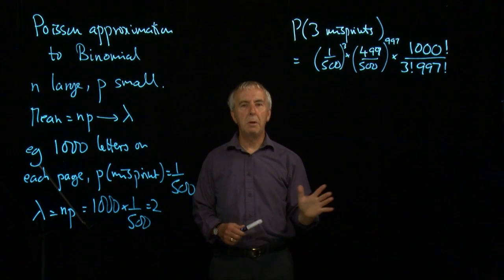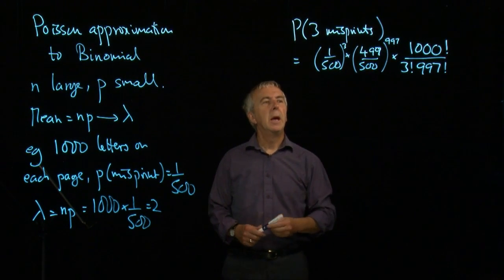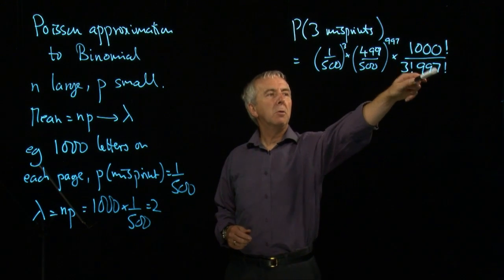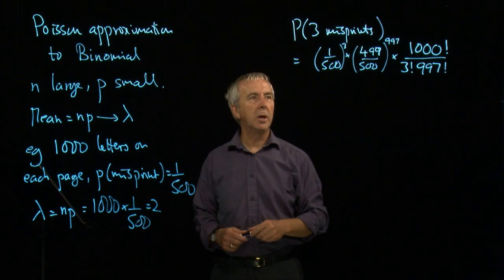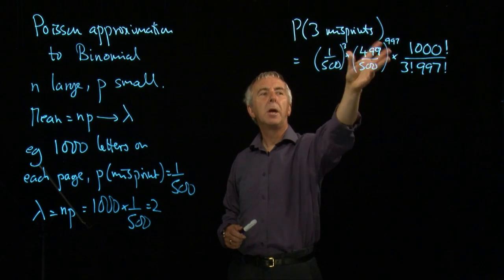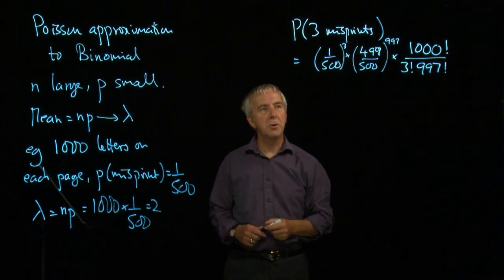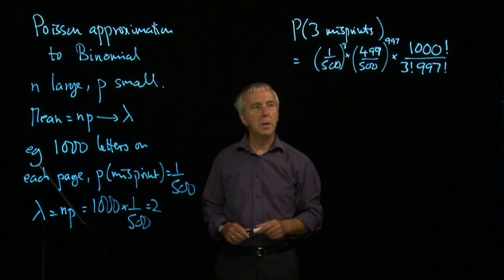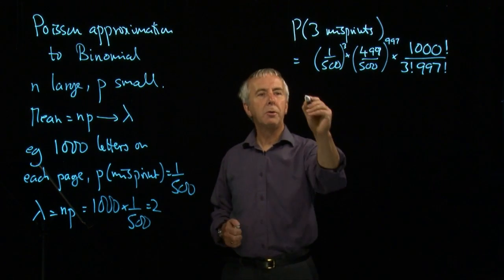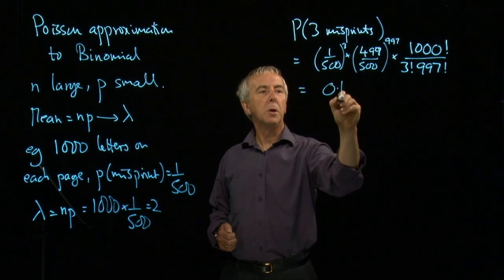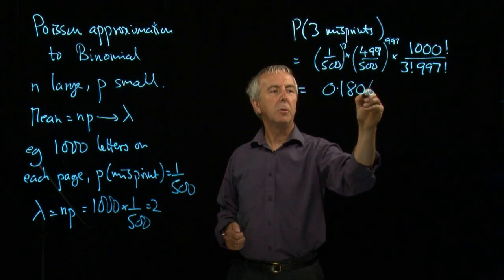And that is a very nasty calculation to do. Most calculators won't do 1,000 factorial. You'd have to do some cancelling by hand to get the answer. And then you've got these very complicated fractions to deal with to very high powers. It's not an easy sum to do. But we can work it out. And the answer is 0.1806.